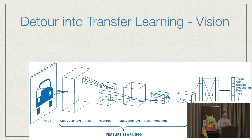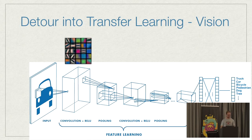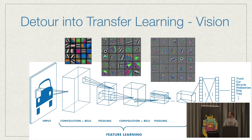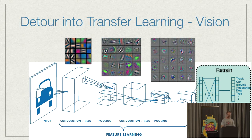The same happens in the vision domain. Towards the input the network starts learning things like line features, color contrasts, simple features, and then builds upon that through the network to learn corners, circular shapes, and towards the output assembles these into more complex objects - like the wheel of a car or the structure of a person's eye. You can then retrain only that last part for your specific application domain - instead of building a vehicle classifier, you build a flower classifier or a product classifier.